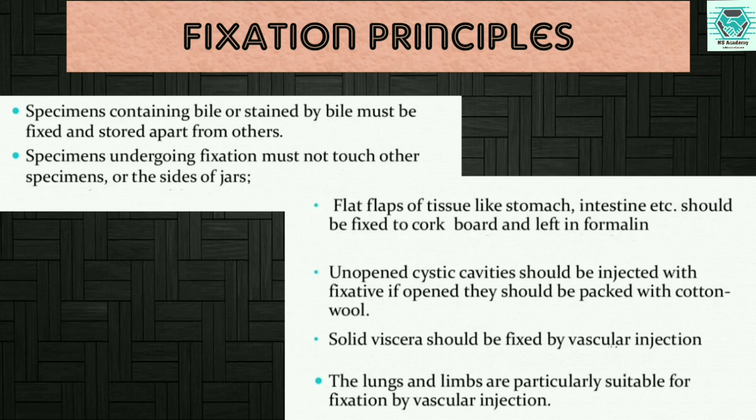These are the standard ways to fix specimens for the museum. Unopened cystic cavities should be injected with fixative. If opened, they should be packed with cotton wool. For solid viscera, they are fixed by vascular injection.